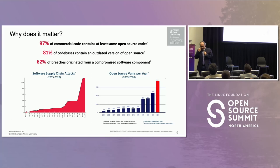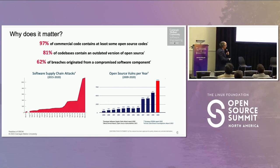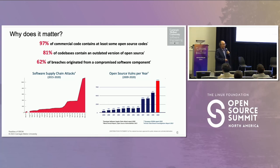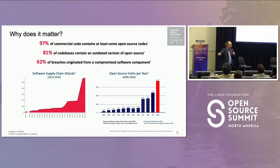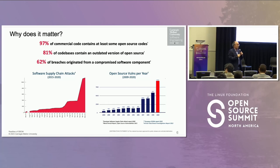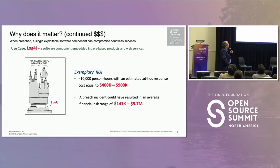I prepped this slide about why it's important to us, but that number got outdated already within a week. We have more percentage in commercial code and other things keep increasing. These numbers are based on the software supply chain report and they keep increasing. The numbers from yesterday got bigger, and I'm sure the next couple of months they'll get even bigger.